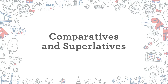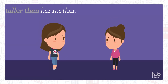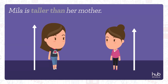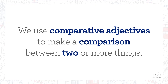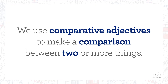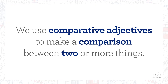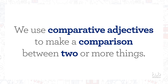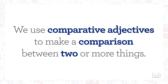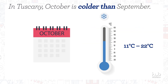Comparatives and superlatives. Mila is taller than her mother. We use comparative adjectives to make a comparison between two or more things. For example, in Tuscany, October is colder than September.